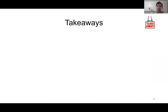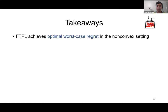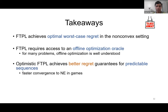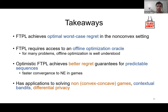Key takeaways from this part of the talk: First, FTPL achieves optimal regret even when loss functions are non-convex. Second, FTPL needs access to an offline optimization oracle, which can be efficiently implemented for many problems using global optimization. Third, optimistic FTPL achieves better regret guarantees for predictable sequences and helps converge faster to Nash equilibrium in two-player games. Finally, our results have applications to solving non-convex, non-concave games, and to other problems such as contextual bandits and differential privacy.